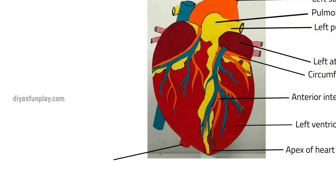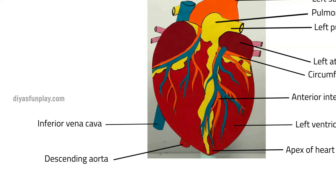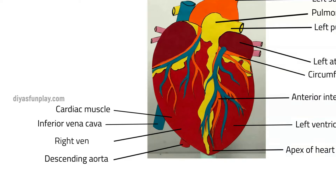Descending Aorta. Inferior Vena Cava. Cardiac Muscle. Right Ventricle. Marginal Artery.